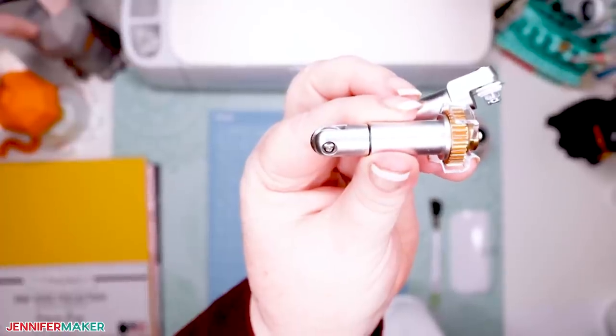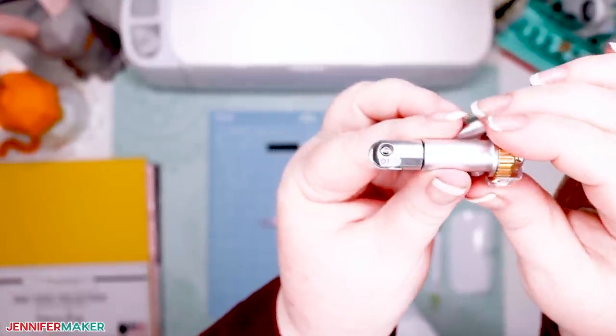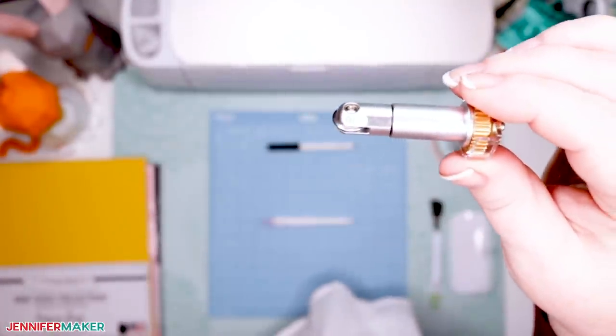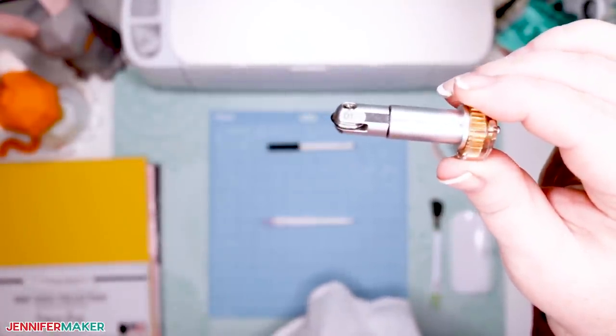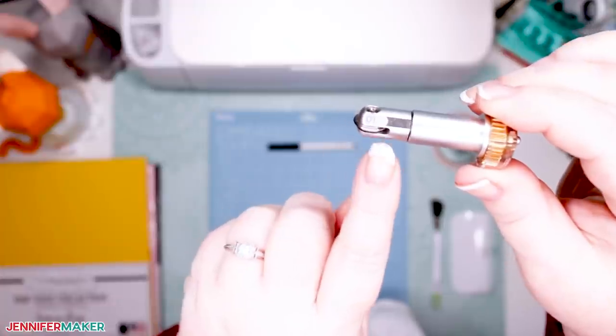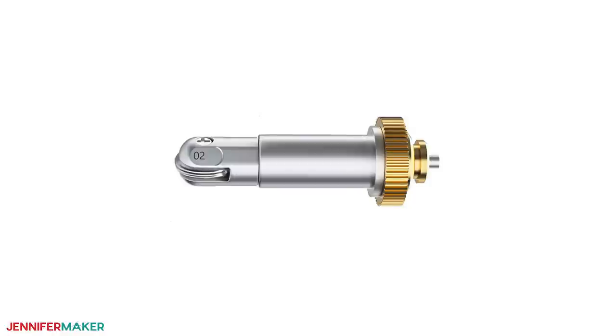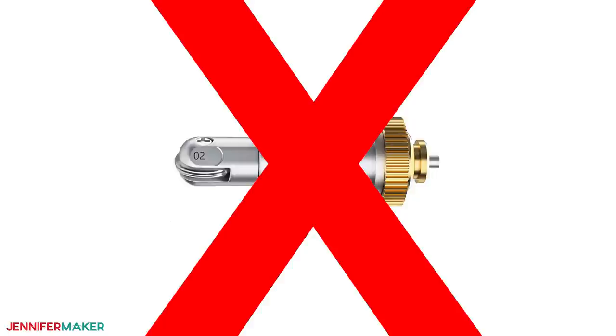The single scoring wheel looks like this and has the numbers 01 printed on the side. You don't want to use the double scoring wheel, which has the numbers 02 on it for this project. And don't confuse the scoring wheel with the rotary blade, which looks similar but will not work for this project.